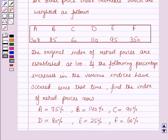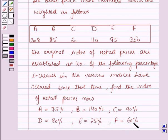The original index of retail prices are established at 100. The percentage increases in the various indices which have occurred since that time are: for A it is 75%, for B it is 150%, for C it is 90%, for D it is 80%, for E it is 25%, and for F it is 60%. Find the index of retail prices now.